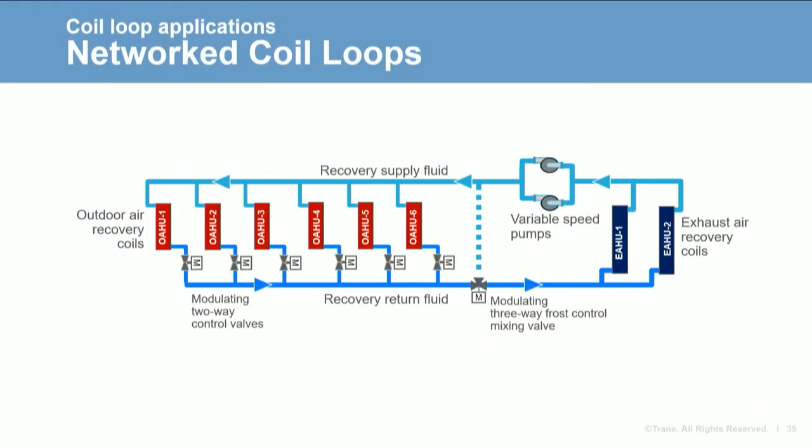Here's an example where heat is recovered from a laboratory exhaust system. Two coils are placed in two separate exhaust systems to reclaim heat, which is then transferred to six different air handlers to precondition the incoming ventilation air. There will be more piping, a larger pump with more pump power, and more glycol when there's a large distance between the coils or if multiple coils are used in a networked coil loop system.